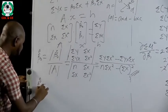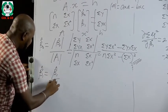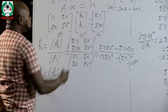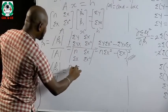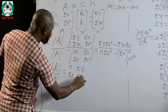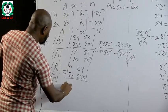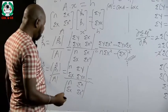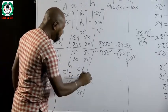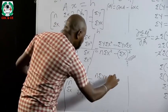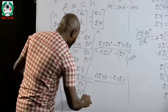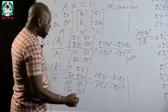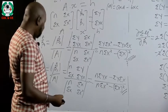For beta-1 estimate: the determinant of the beta-1 matrix divided by the determinant of A. We replace the beta-1 column with the constants, giving numerator matrix [n, summation Y; summation X, summation YX]. The determinant of beta-1 is: n times summation YX minus summation Y times summation X, divided by n times summation X squared minus (summation X) squared. This is the formula for calculating beta-1.